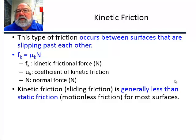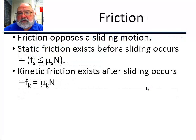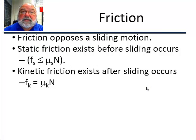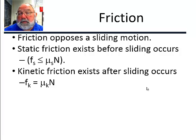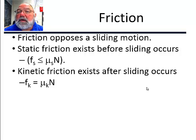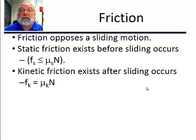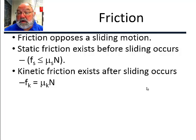To recap: friction opposes sliding motion. Static friction exists before sliding occurs and it's represented by an inequality. If you push just a little, you have a little static friction. If you push more, you have more static friction. If you push more than the maximum static friction can rise to, the object starts to slide and you're in the area of kinetic friction — or sliding friction — which is an equality.